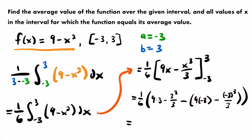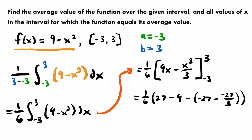Simplifying: 9 times 3 is 27, and 3 cubed is 27, so 27 divided by 3 is 9. That gives us 27 minus 9. Then 9 times negative 3 is negative 27. Negative 3 cubed is negative 27 because negative 3 times negative 3 is 9, and 9 times negative 3 is negative 27. So we have negative 27 divided by 3. Continuing: 27 minus 9 is 18, so we have one-sixth times [18 minus (negative 27 minus negative 27/3)].